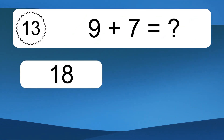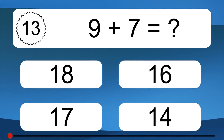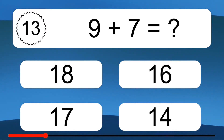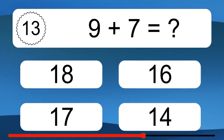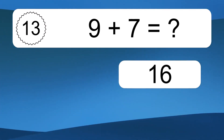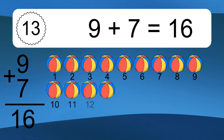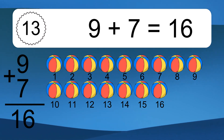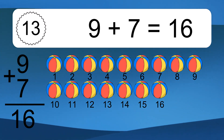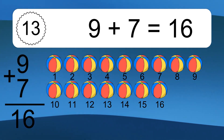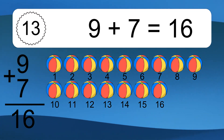9 plus 7 equals what? Let's count it: 1, 2, 3, 4, 5, 6, 7, 8, 9, 10, 11, 12, 13, 14, 15, 16.